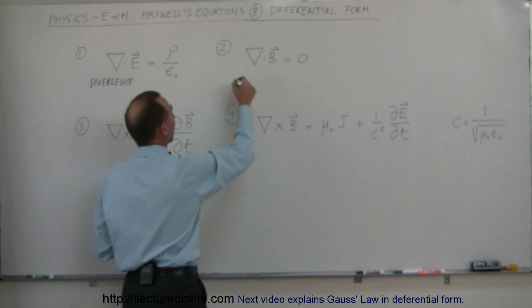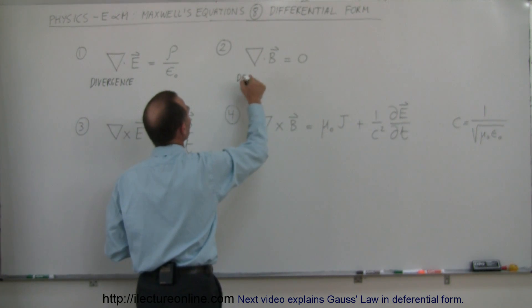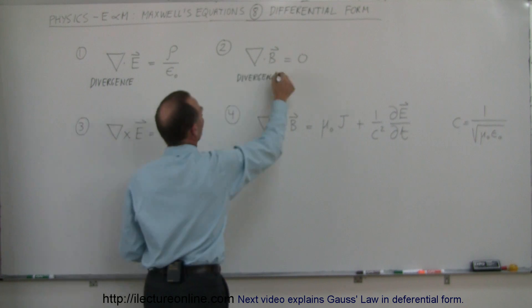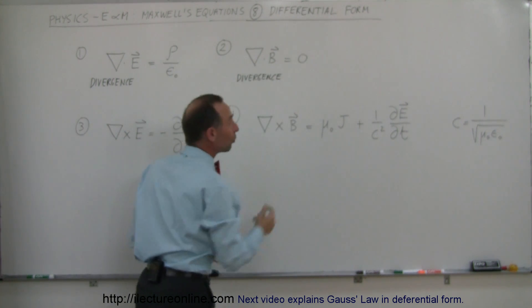We have the same thing here. If we take the divergence of the magnetic field, notice we always get zero.